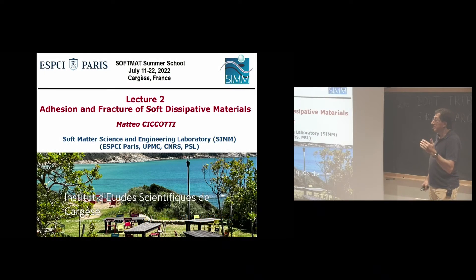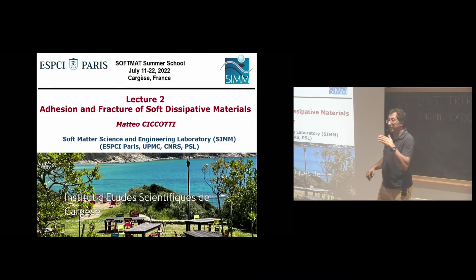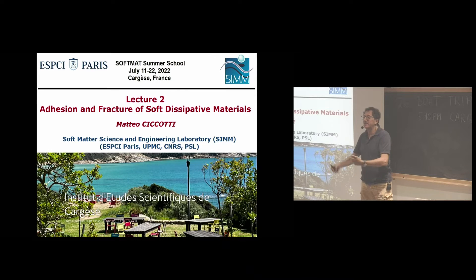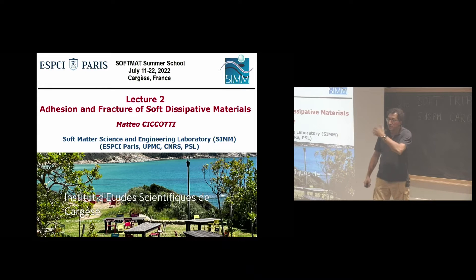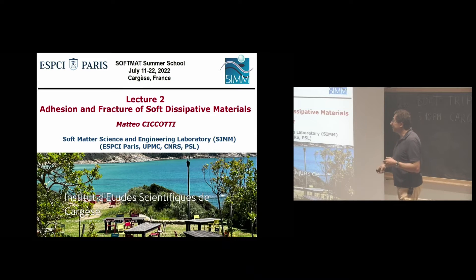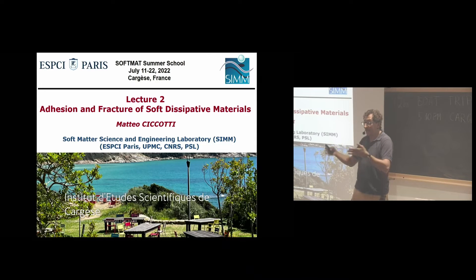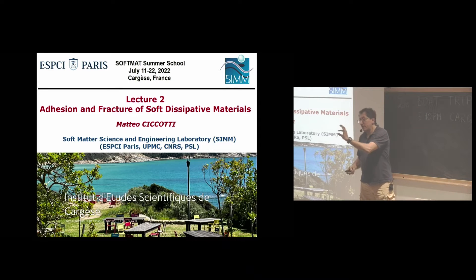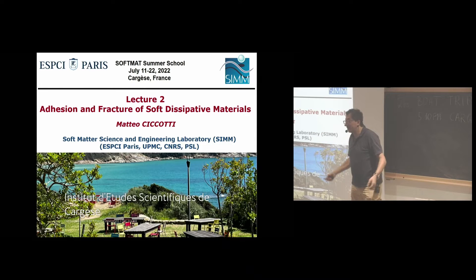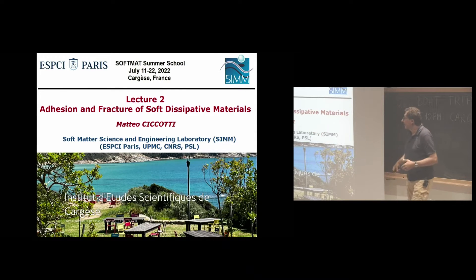We defined fracture as essentially the creation of new surfaces — in basic theory, it's new surface energy. In real materials, fracture energy is much more and involves an irreversible energy cost. Today we move to soft and dissipative materials, which are problematic for fracture mechanics: we want linear elasticity and dissipation confined to a small region near crack tips, but in polymer systems dissipation can occur everywhere.